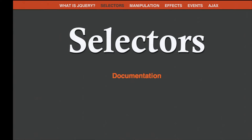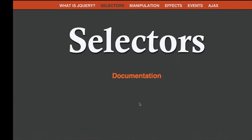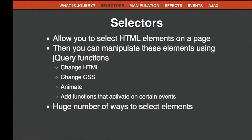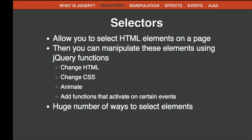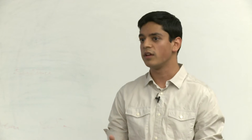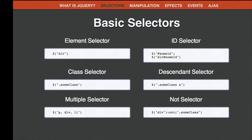Now I'll start talking about the actual functionality in jQuery. The first thing is selectors—this is what jQuery was initially conceived to provide. The idea is that you can select HTML elements on a page. Elements have IDs, classes, and other identifying aspects; they're in different orders and nested inside each other. jQuery allows you to construct simple queries that retrieve elements from the page, and then you can manipulate those elements using jQuery functions—changing HTML, CSS, animating, and adding event handlers.